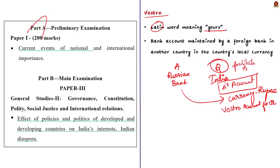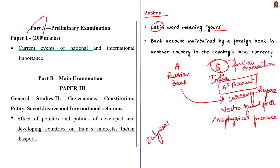The account-holding entity does not need a physical presence in another country to carry out transactions. In July 2022, the Reserve Bank of India introduced a new mechanism for international trade settlements in rupees, aiming to promote exports and facilitate imports. This mechanism allowed Indian banks to maintain a Vostro account of a foreign bank. Since the US dollar is the world's most used reserve currency, most international trade occurs in US dollars.